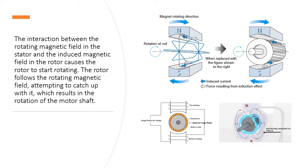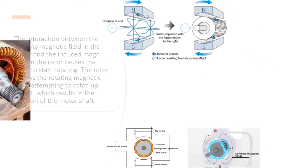The interaction between the rotating magnetic field in the stator and the induced magnetic field in the rotor causes the rotor to start rotating. The rotor follows the rotating magnetic field, attempting to catch up with it, which results in the rotation of the motor shaft.